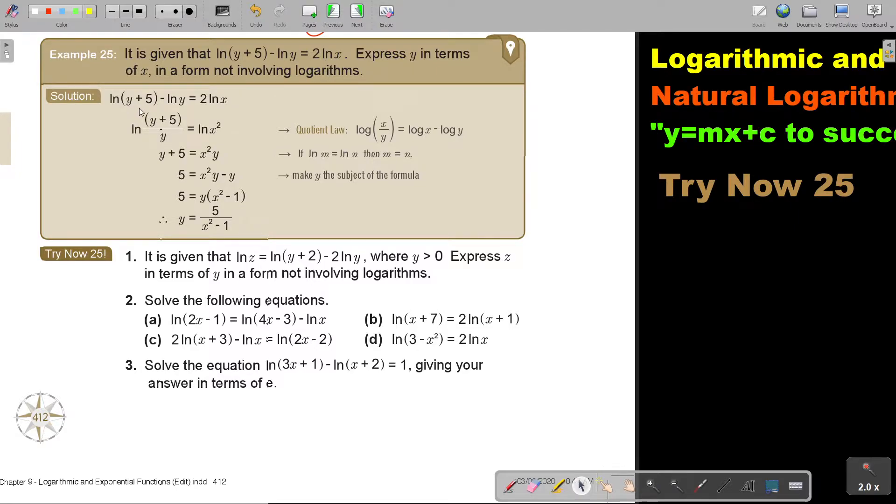So let's first start. The first thing, we make this one term by using the laws, the quotient law. So we write, when it was subtract, there was two ln words. In division, there will only be one ln word.